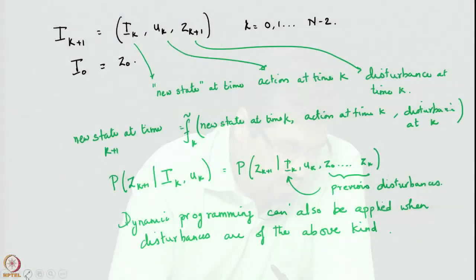This reduction comes at a certain price: a dramatic increase in the complexity of the problem. What is the state space of this particular problem now? The state space is the space of information vectors at any time.